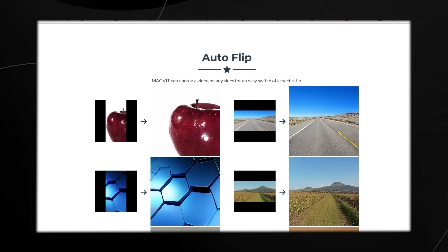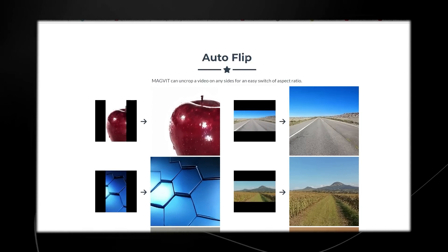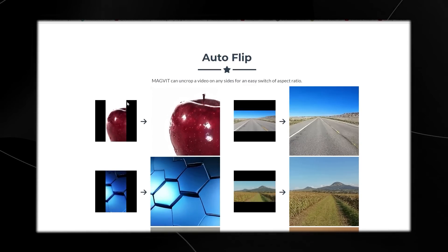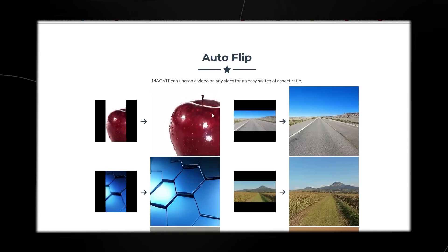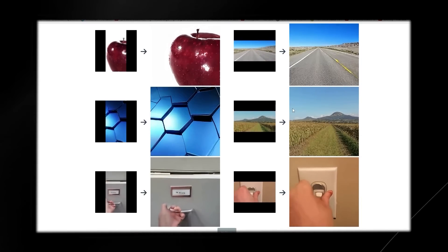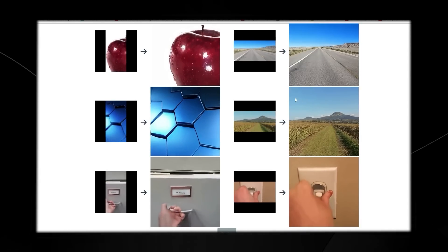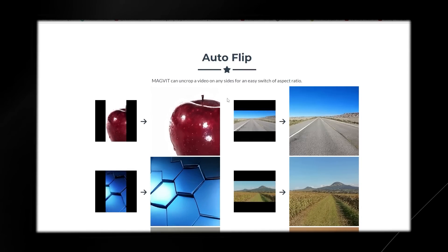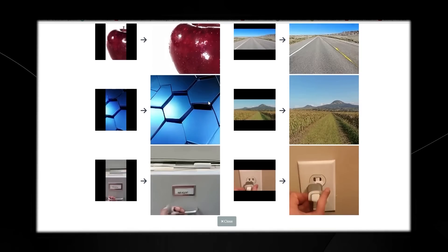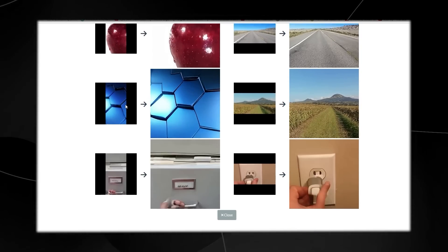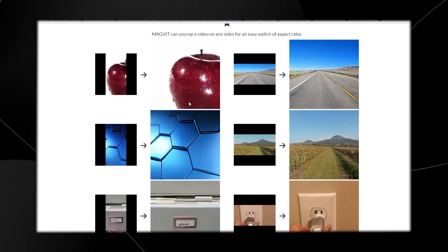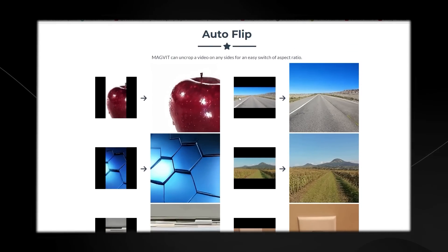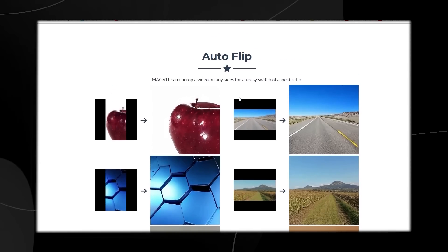MAGVIT also has a feature called Auto Flip, where it can uncrop a video on any sides for an easy switch of aspect ratio. You have the original video with black bars, and then the black bars are removed to present an actual full video. This allows users to take their original footage and outcrop it. I find it interesting — will this technology be added to tools like Runway's Gen 2 or video editing services like Adobe Premiere Pro? Imagine you have something shot in the wrong aspect ratio — being able to change it very quickly with a click of a button would be incredible.